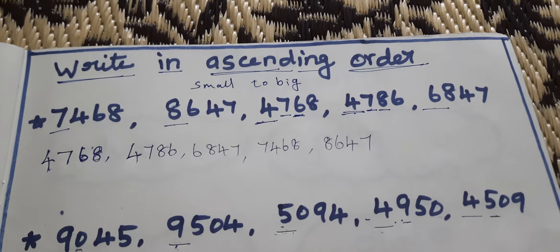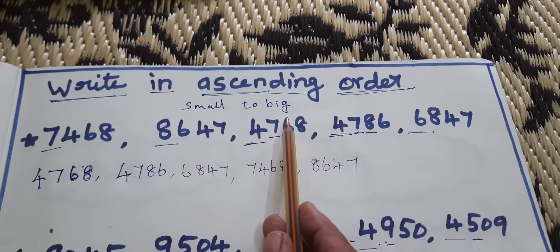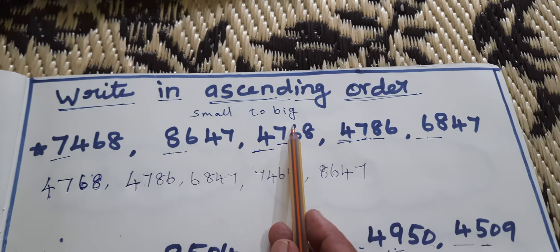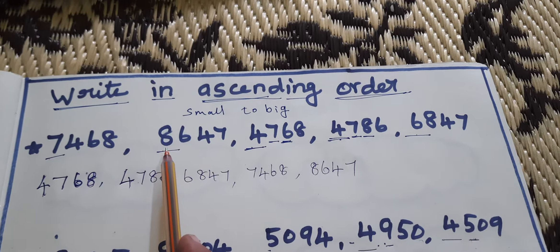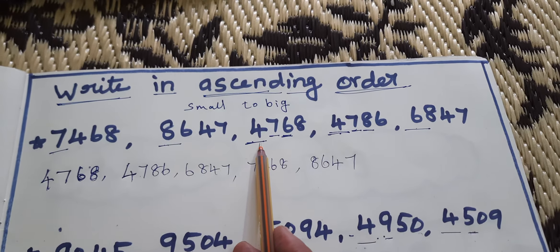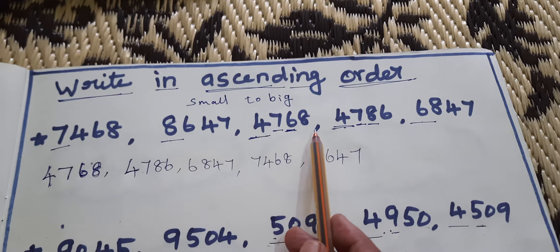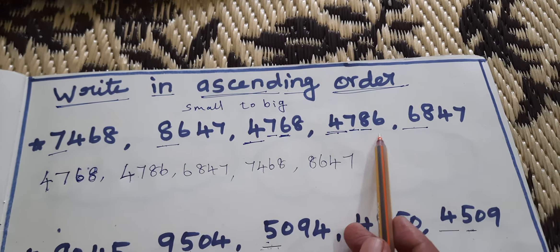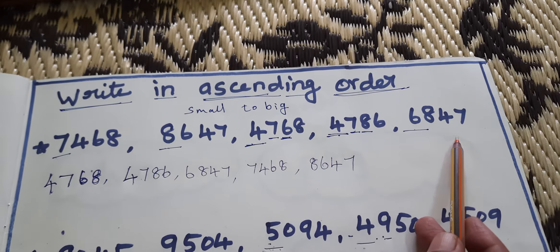Write in ascending order. Ascending order means small to big. The numbers are: 7468, 8647, 4768, 4786, 6847.